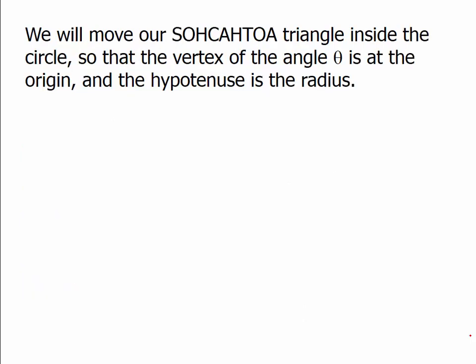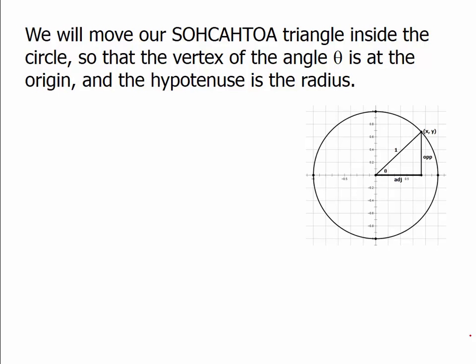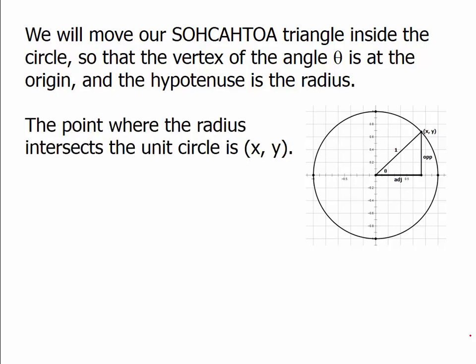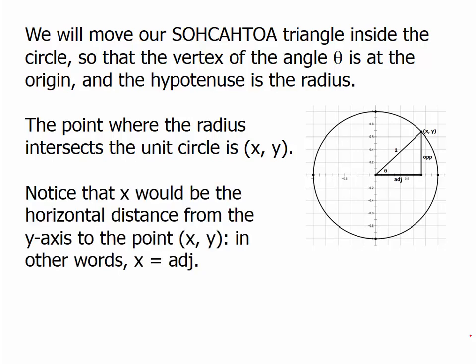We place our SOHCAHTOA triangle inside the unit circle so that the vertex of the angle we care about is at the origin, and the hypotenuse is the radius. The radius has a length of 1. The point where the radius intersects the unit circle we call point (x, y). The x-coordinate is the horizontal distance from the y-axis to that point — that equals the adjacent side. Similarly, the y-coordinate is the height above the x-axis, which equals the opposite side.